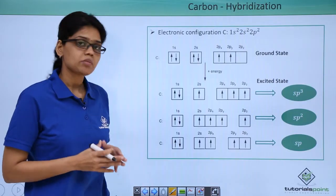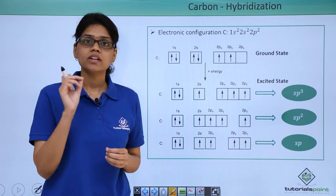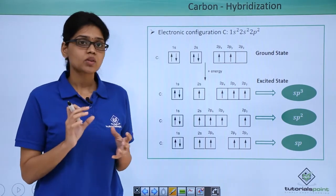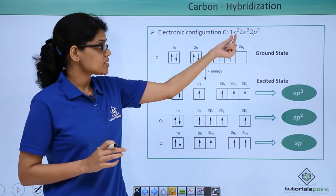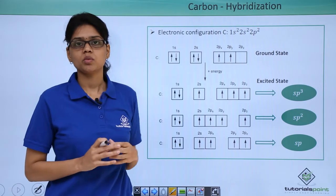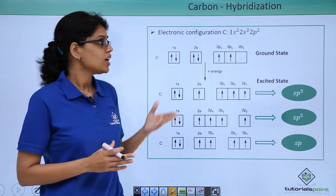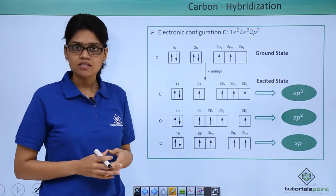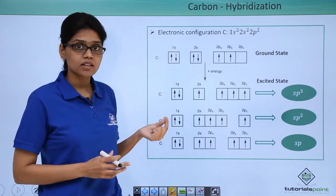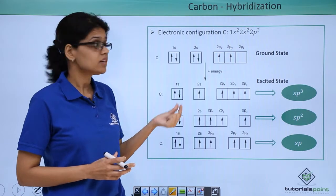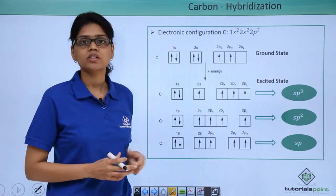Now, to determine hybridization, the first thing you need to know is the electronic configuration. Here we are talking about carbon. The electronic configuration of carbon is 1s2, 2s2, and 2p2. In the ground state electronic configuration, 1s2 is completely occupied, 2s2 is also completely occupied, and 2p is filled according to Hund's rule.